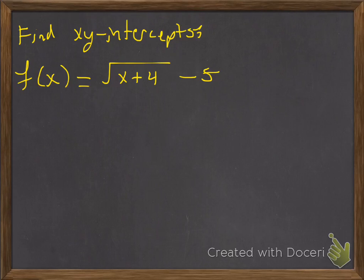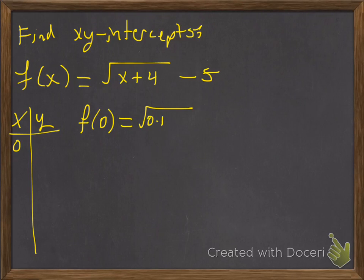We're going to do this similar to how we found intercepts for other functions. We'll make an x, y, t chart and plug in 0 for x, and we get the square root of 0 plus 4 minus 5.